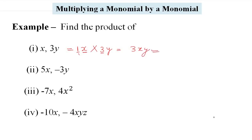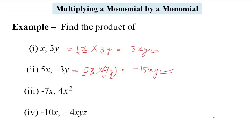Second example: 5x और negative 3y. That is equal to 5x multiply by (−3y). क्योंकि दो signs साथ में आ रहे हैं, multiply और subtraction, तो हम bracket use करेंगे। 5 multiply by −3 = −15, और x multiply by y = xy. So answer हो गया −15xy.